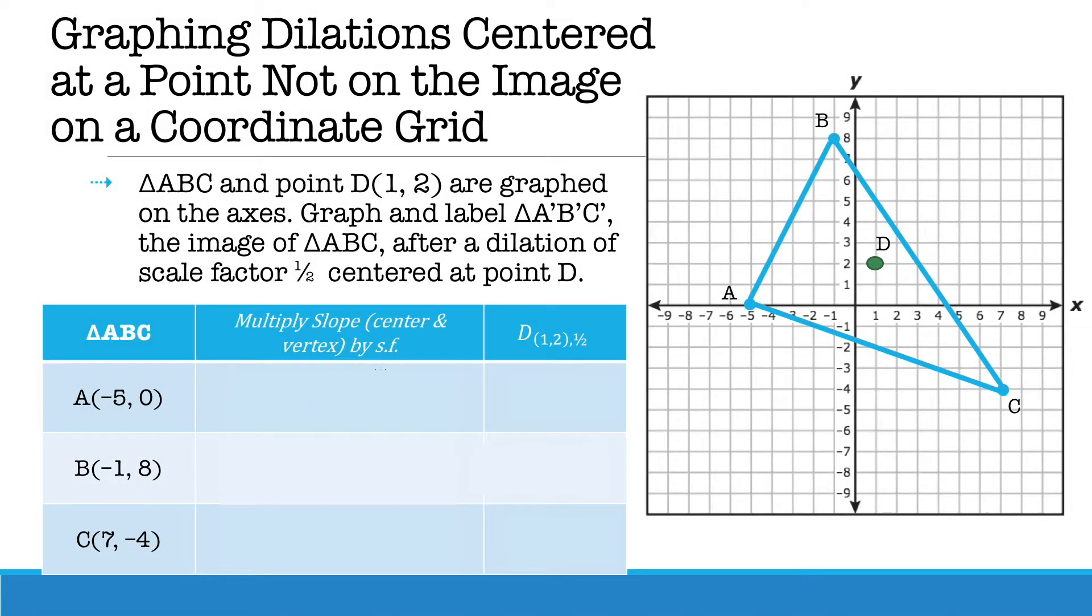Now let's take a look if you were graphing dilations that are centered at a point not at the origin and not on the image. Here we have triangle ABC and point D which is (1, 2). Graph and label triangle A'B'C' the image of triangle ABC after a dilation of a scale factor of a half centered at point D.